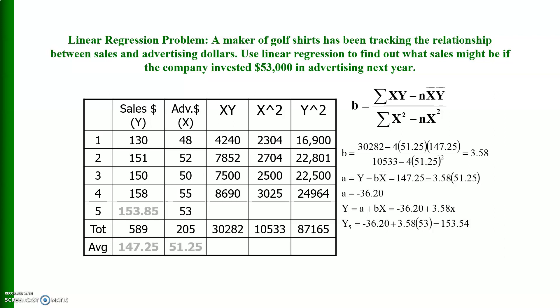Here is how we can calculate A and B. The method has been shown here, and you can put these values in the formula and you can get that B is equal to 3.58 and A is equal to minus 36.20.